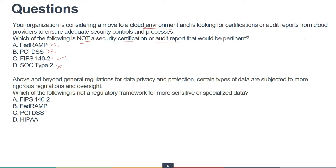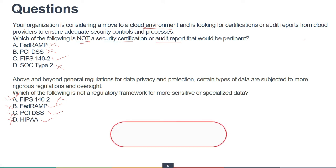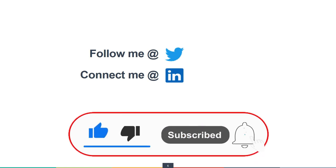Above and beyond general regulations for data privacy and protection, certain types of data are subject to more rigorous regulations or oversight. Which of the following is NOT a regulatory framework for more sensitive or specialized data? The correct answer is FIPS, because it is not a regulatory framework for sensitive or specialized data, while FedRAMP covers U.S. federal companies, PCI DSS covers payment-specific data, and HIPAA covers health-specific data. With this we conclude this video. Thanks for watching — follow me on Twitter or connect on LinkedIn, KD Cyber Talks.